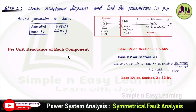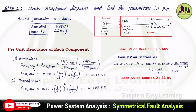Now we can determine the per unit reactance of each component — generator, transformer, and feeder. For the generator and transformer, use the formula: X_pu(new) = X_pu(given) × (kV_given / kV_new)² × (MVA_new / MVA_given). For the generator, X_pu(given) is 0.08, kV_given is 6.6, kV_new is 6.6, MVA_new is 5, and MVA_given is 5. So you get 0.08 per unit.